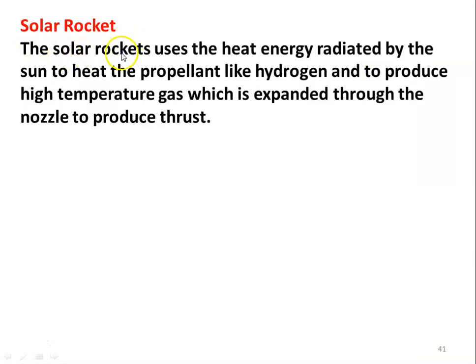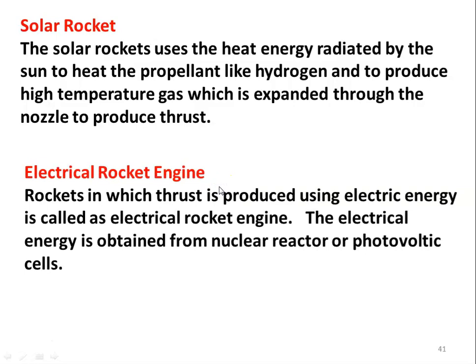The solar rocket uses heat energy radiated by the sun to heat the propellant — such as hydrogen — and produce high-temperature gas, which is expanded through the nozzle to produce thrust. Using solar panels, we obtain heat energy from the solar system to heat the hydrogen propellant. In the electrical rocket engine, thrust is produced using electric energy. The electric energy is obtained from a nuclear reactor or photovoltaic cells, which convert solar energy into electric energy to operate the rocket engine.